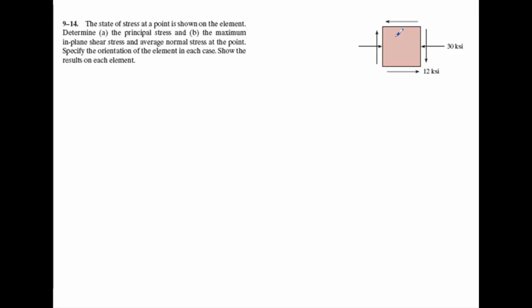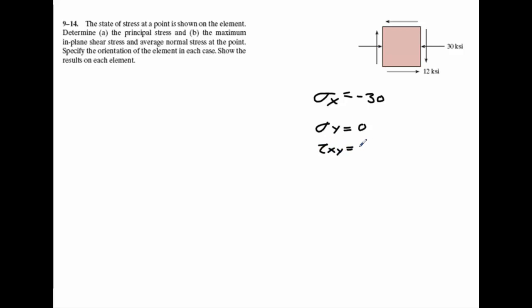This is problem 9-14, and you have this element shown. First thing to do is indicate which way your stress is going. Your normal stress in x going in is compression, so you'll make that negative 30. You have no y, so just make that zero. Now your shear — you've got to be careful about this — this is going clockwise, so you make your shear xy equal to negative 12.